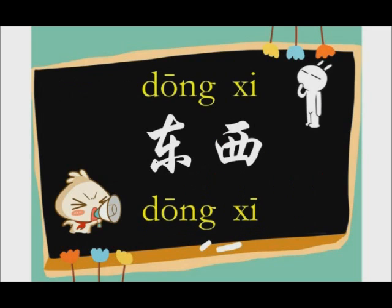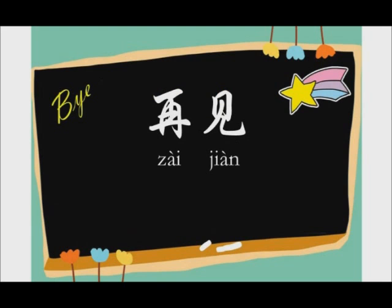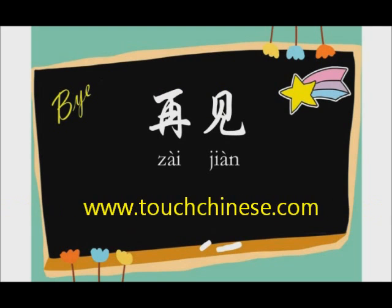Now, are you clear about the two different pronunciations? 东西. 东西. All right. That's it for today. See you next time. 再见.